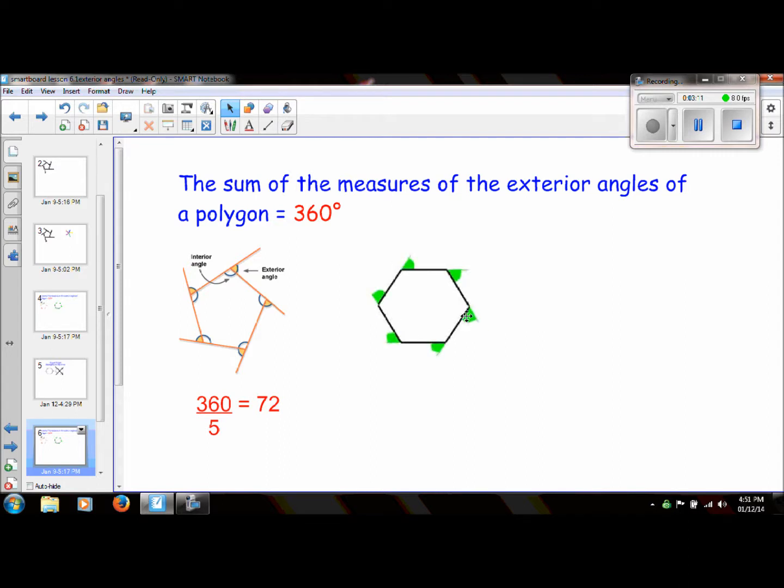This is a hexagon. It has six exterior angles, or six sides. So all you have to do is 360 divided by 6 to get 60 degrees. So each exterior angle would be 60 degrees.